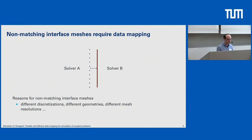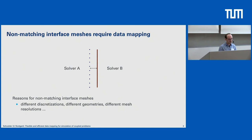We have solver A defining a coupling interface, and solver B defining a coupling interface. As we can see, both of these coupling interfaces are non-matching at the interface. There might be a variety of reasons for this — for example, different discretizations or different geometry representations. In essence, we have the problem that data lives on one side of our coupling interface and we want to get a solution on the other side.